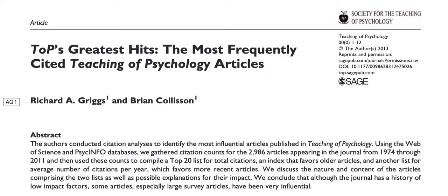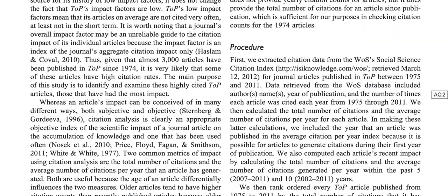Hi again. I have another question from one of my students, and what we're going to do is analyze a given quantitative frequency distribution and then try to answer some questions regarding it. I would like to cite this paper where I got the table: T.O.P. Greatest Hits — the most frequently cited teaching of psychology articles, a paper by Griggs and Collison. All right, let's get into it.